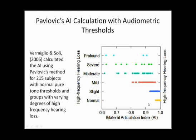In a study presented at the American Academy of Audiology in 2006 and published in 2012, 215 subjects were tested using Pavlovich's AI method. Groups included subjects with normal pure tone thresholds (15 dB HL or better), and groups with slight, mild, moderate, severe, and profound high-frequency hearing loss.